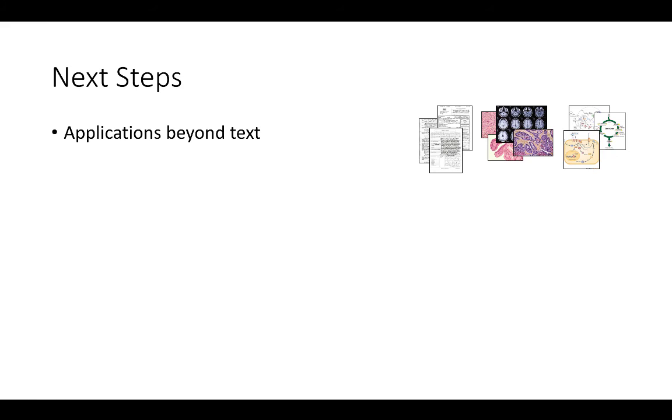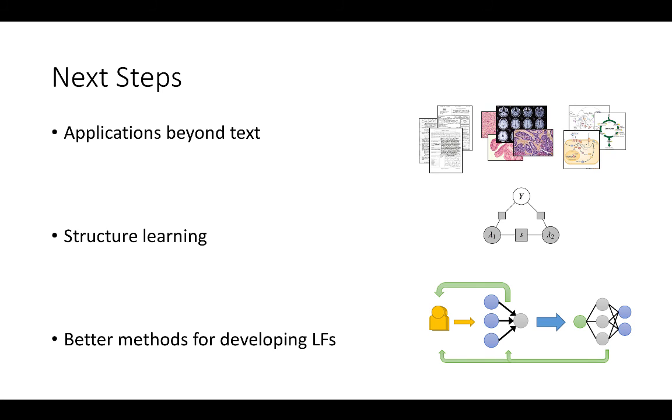We're also working on extending this to applications beyond text, such as tables, images, and diagrams, to automatically learn the structure of correlations between labeling functions, and to adding new feedback loops between the generative and discriminative models and the user.